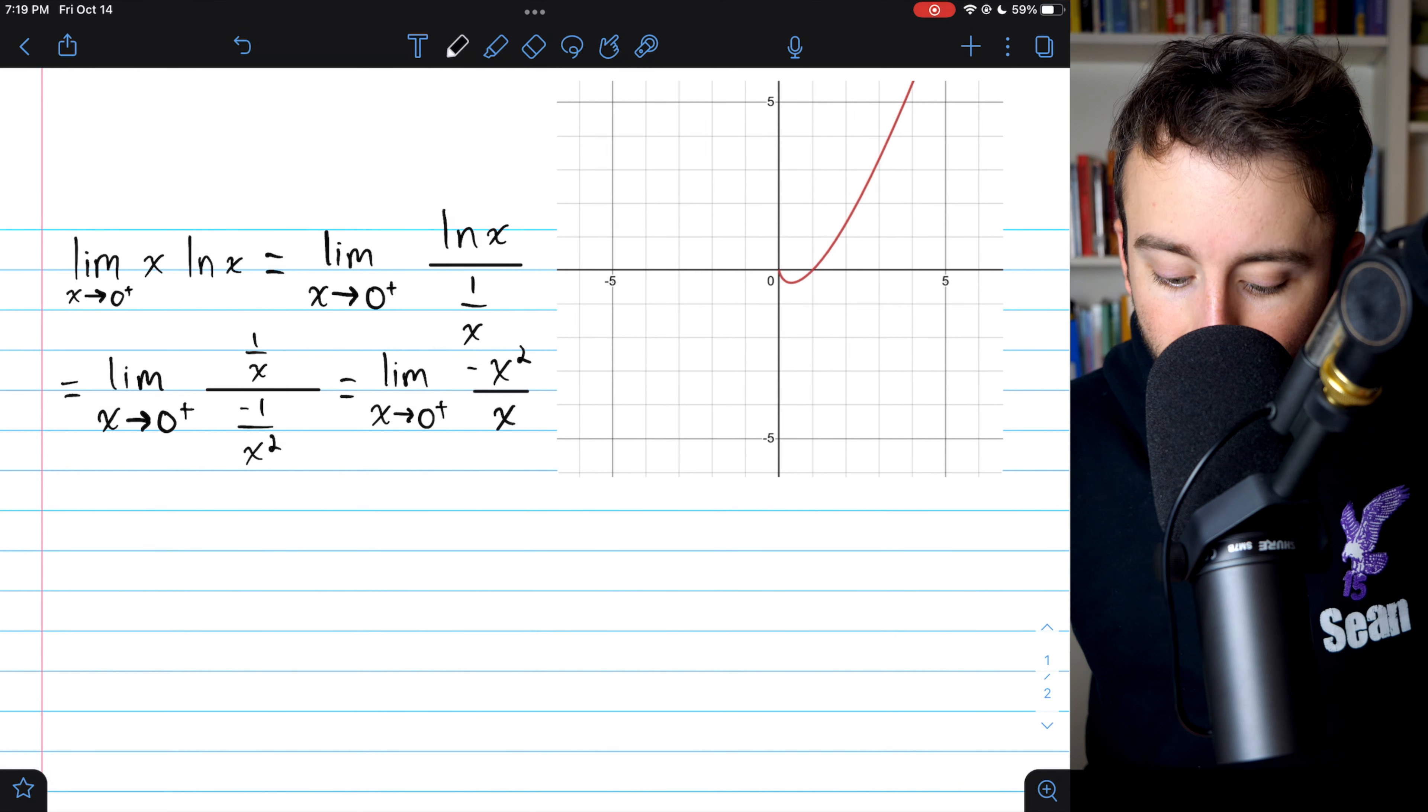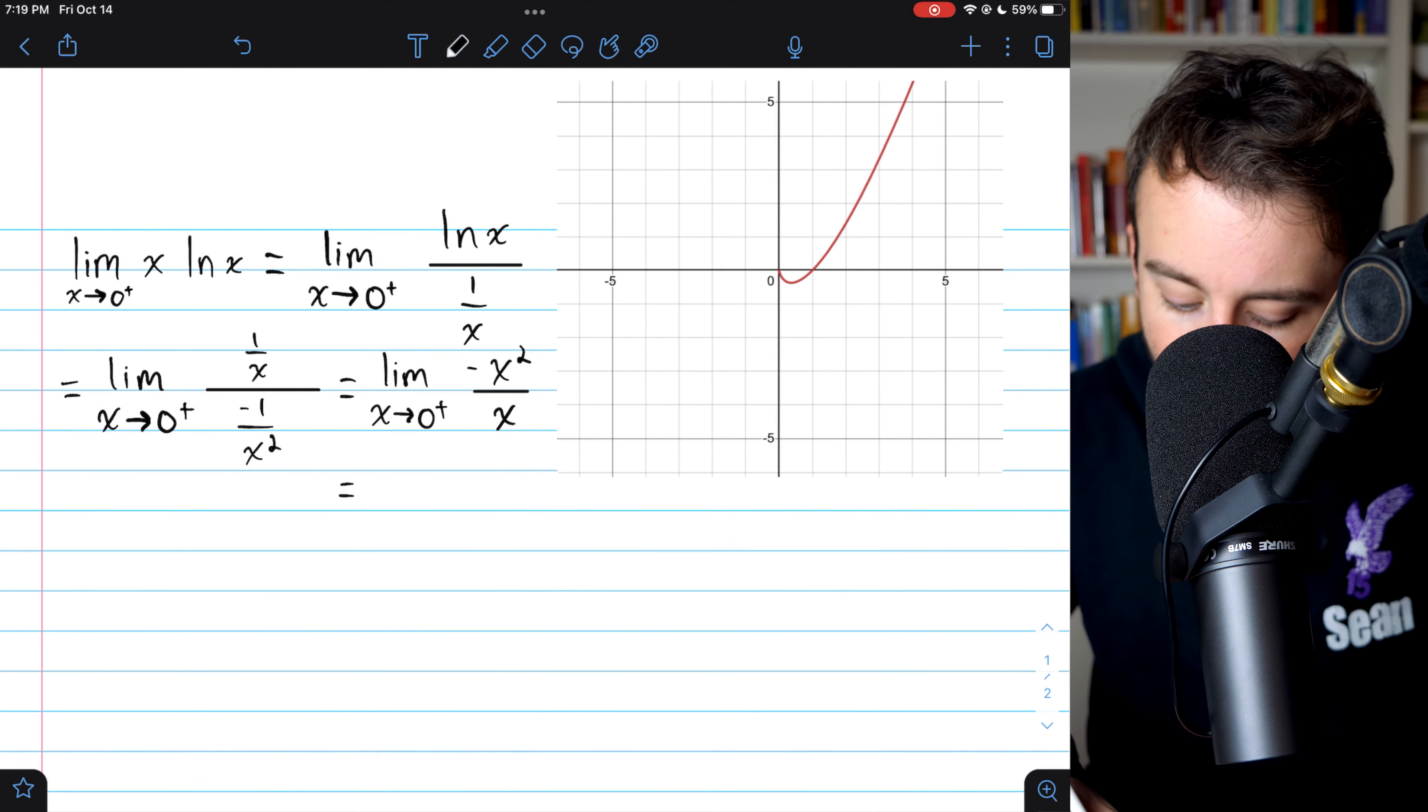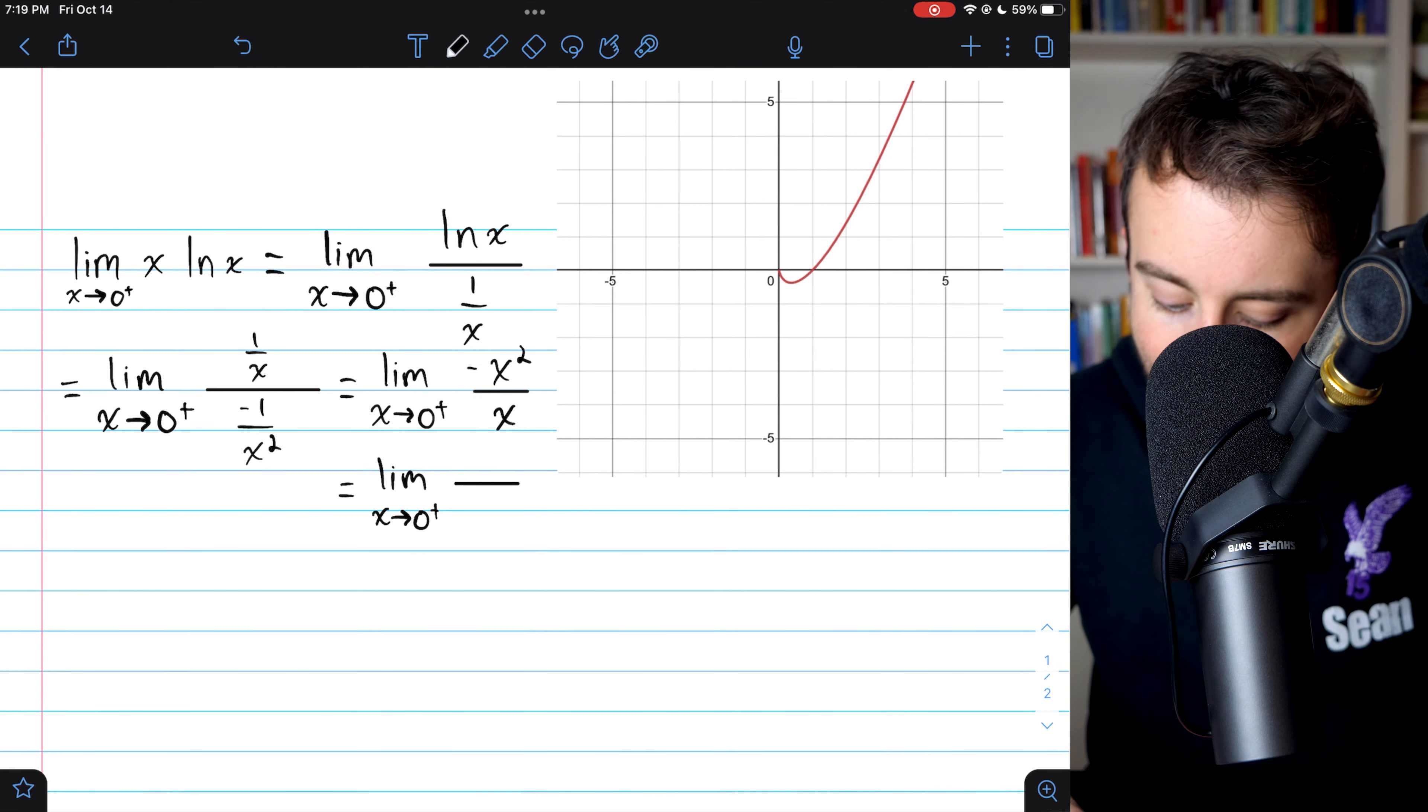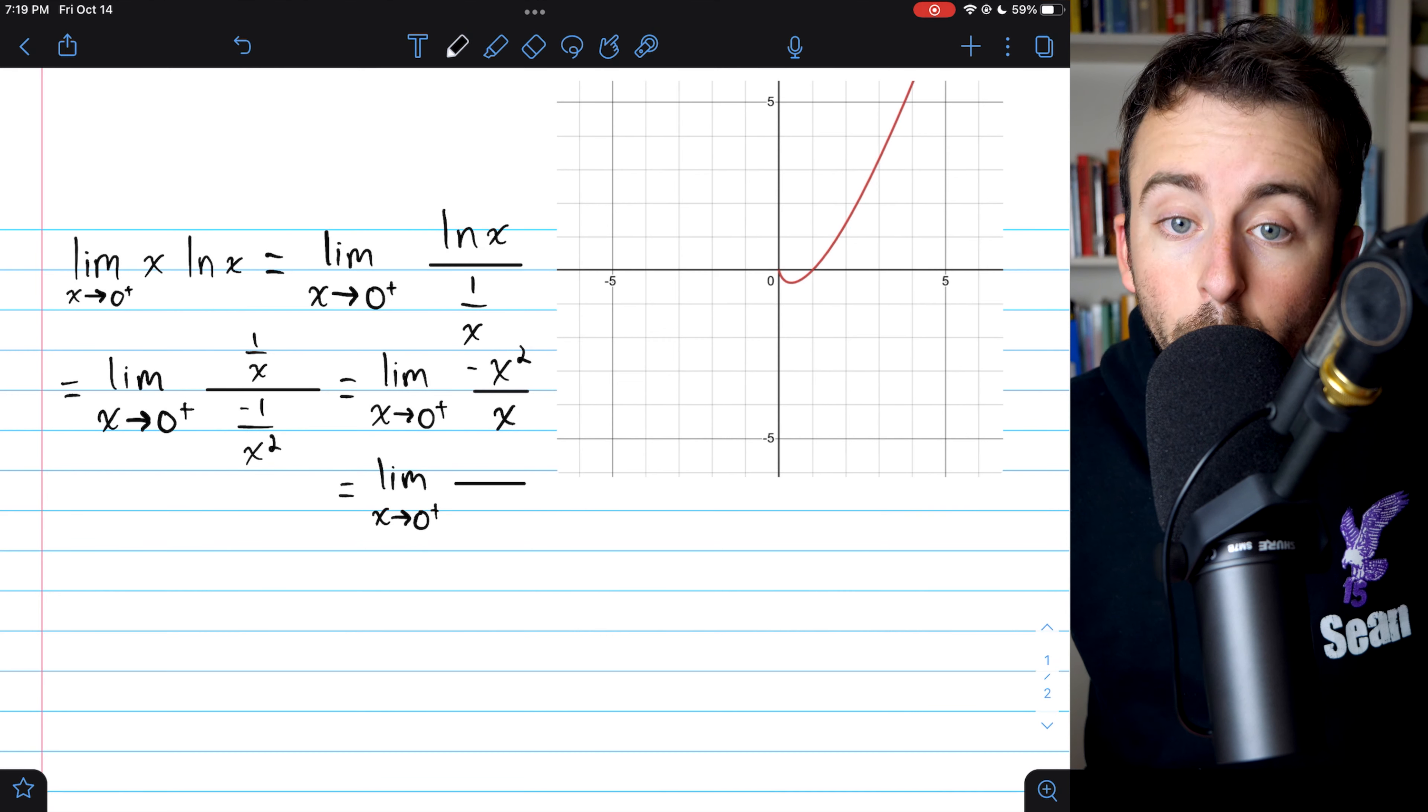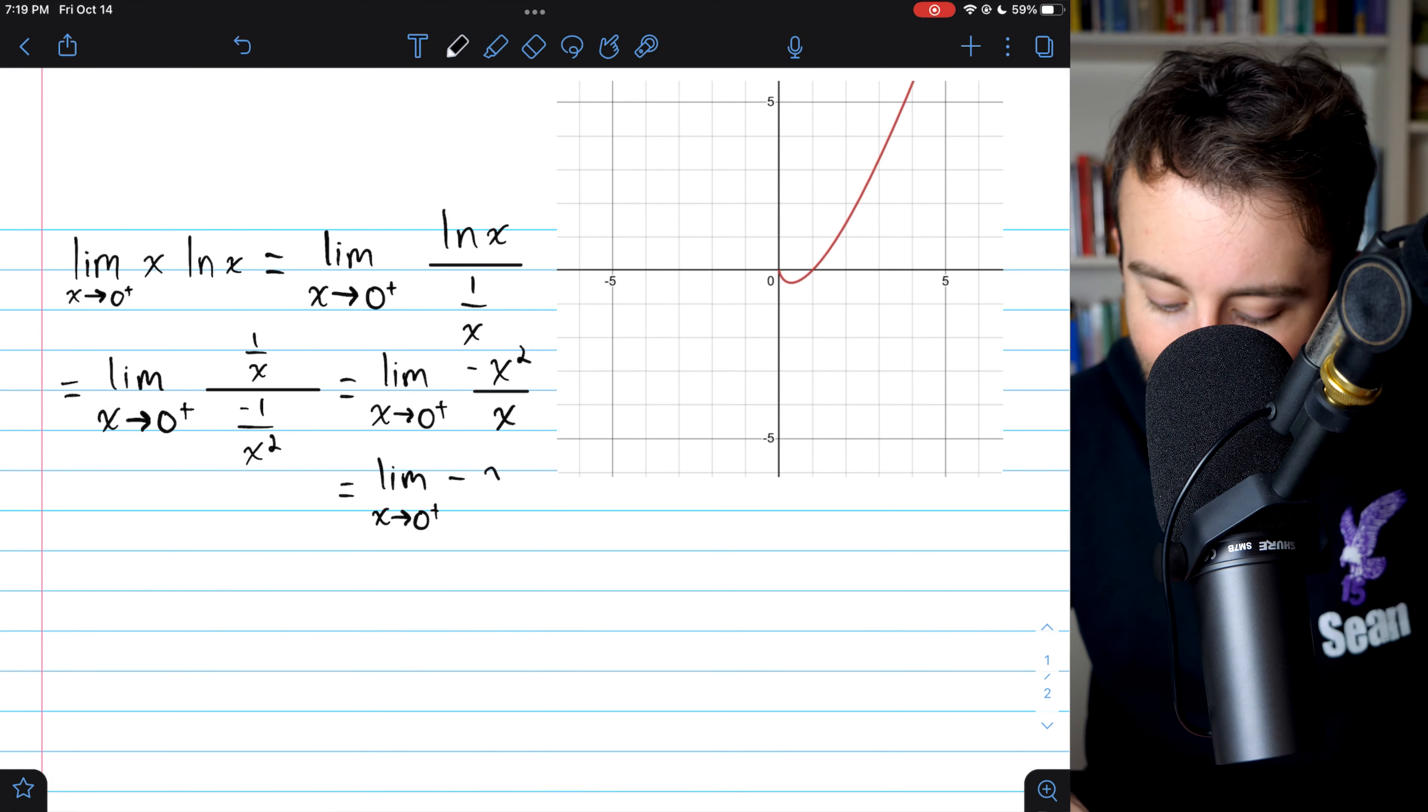And now the x's will cancel out. And so what we've got is the limit with x approaching zero from the right of negative x over one, or just negative x.